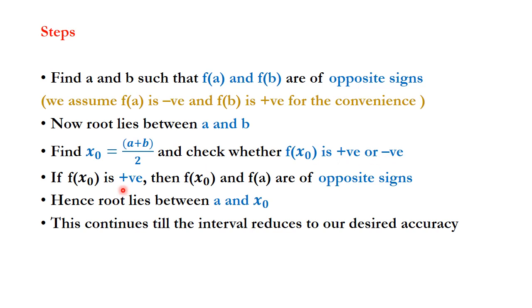If f(x₀) is positive, then f(x₀) and f(a) are of opposite signs, which means the root now lies between x₀ and a. This bisection procedure continues until the interval reduces to our desired accuracy.